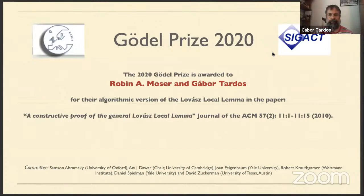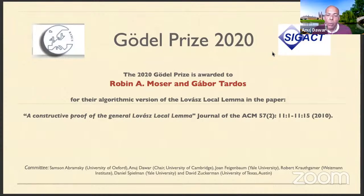The Gödel Prize 2020 is awarded to Robin Moser and Gabor Tardosh. For the paper, A Constructive Proof of the General Lovász Local Lemma, which appeared in the Journal of the ACM in 2010. This is a paper which has been enormously influential, not just in terms of the result proved, but in terms of the methods introduced in the proof.